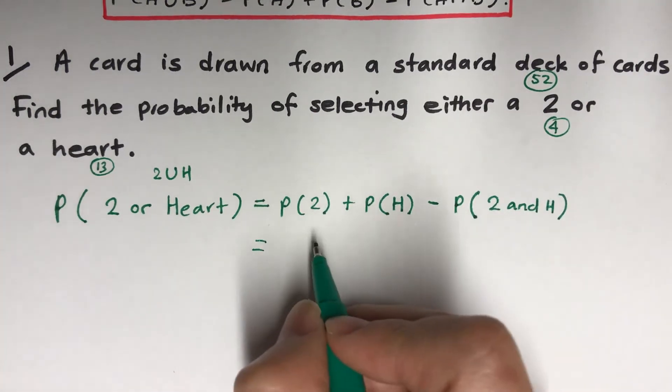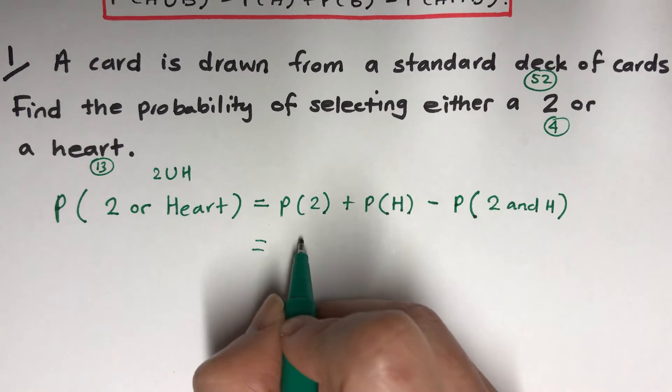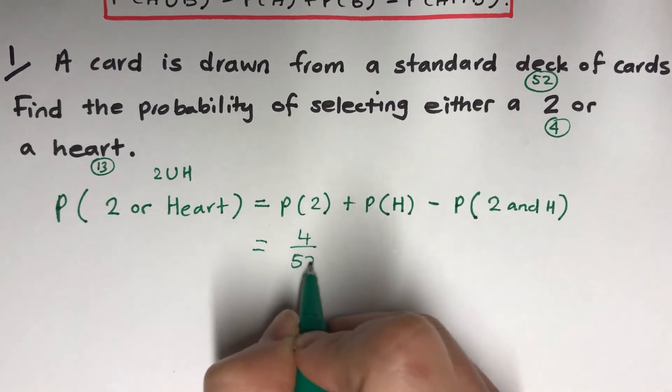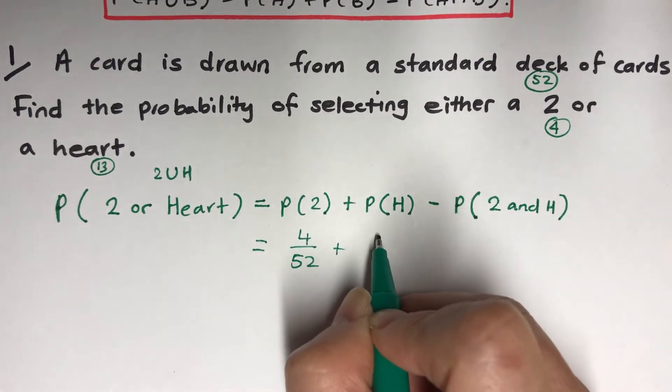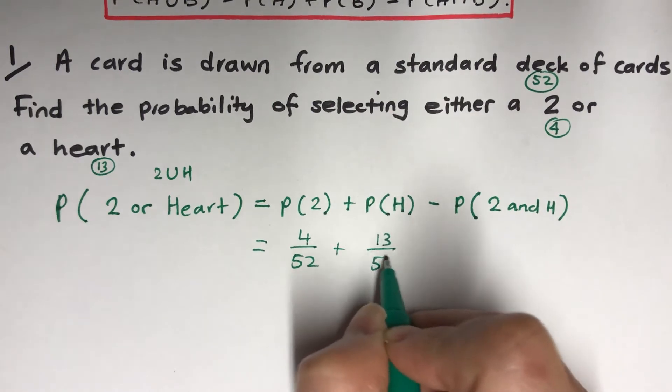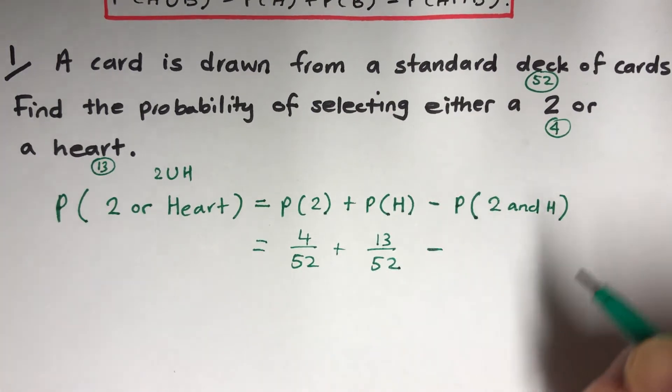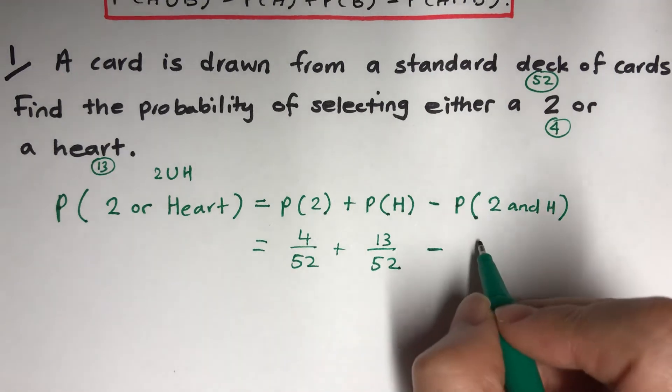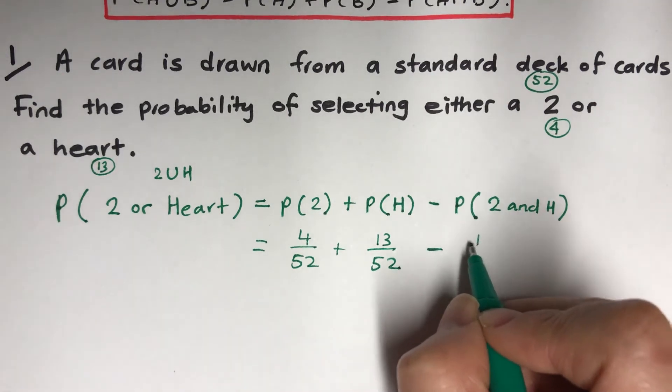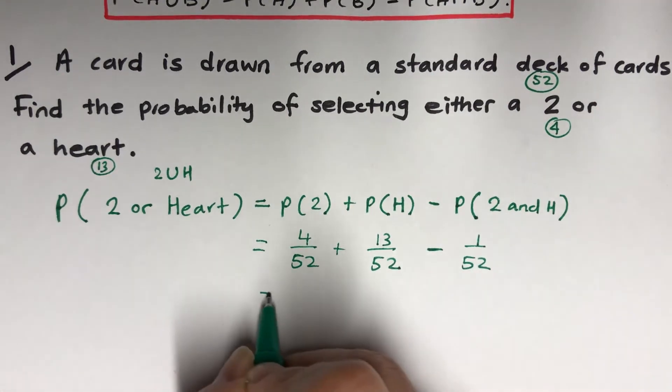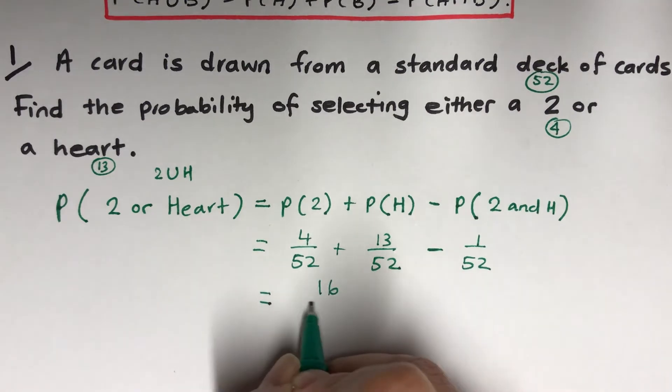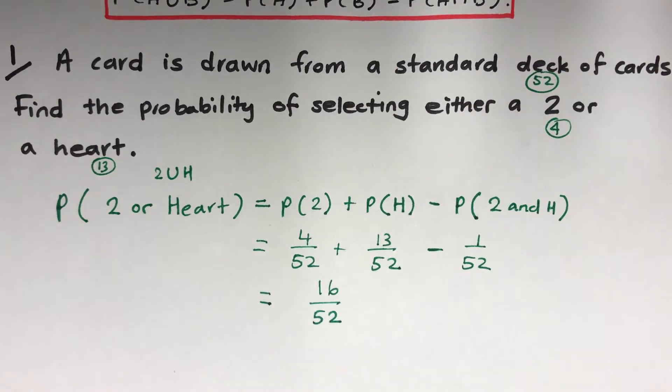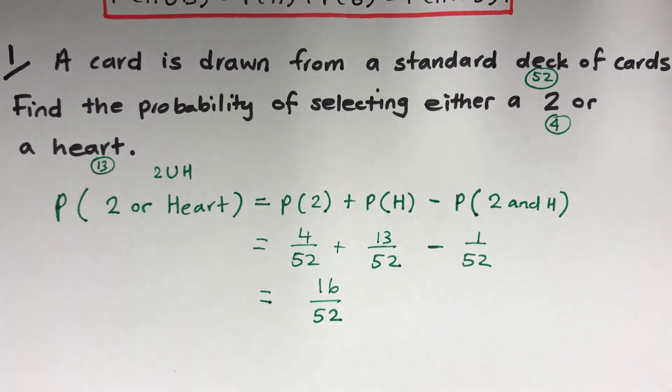How many twos can we get? 4 out of 52. How many hearts can we get? 13 out of 52. And how many 2 and heart, heart of 2? That's 1 over 52. If we do that, 16 over 52. Now I didn't simplify, but go ahead and make it simplified.